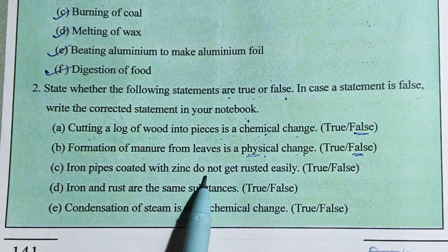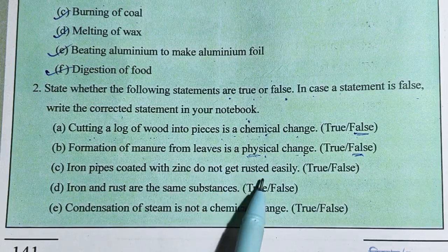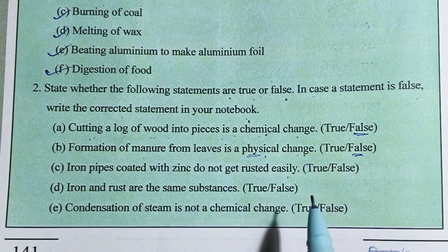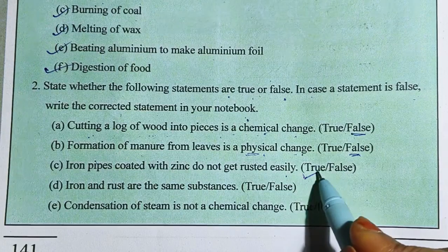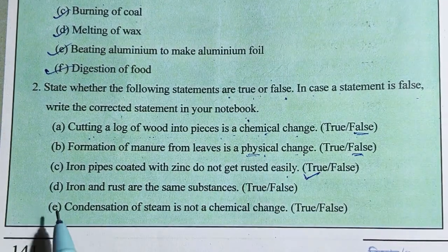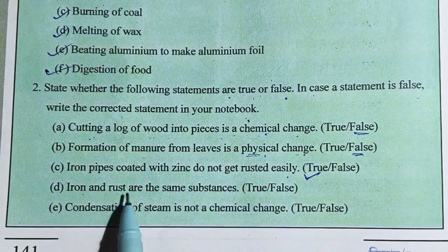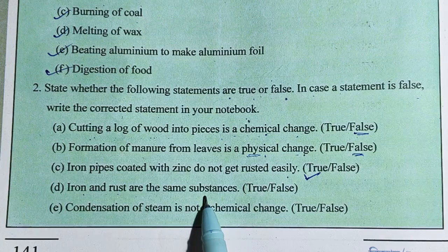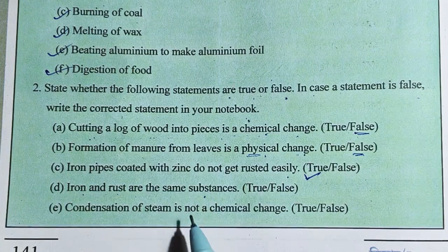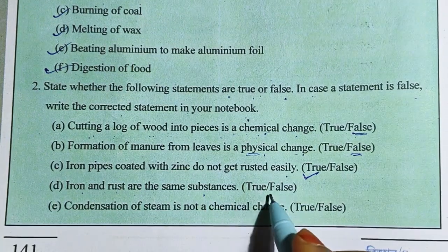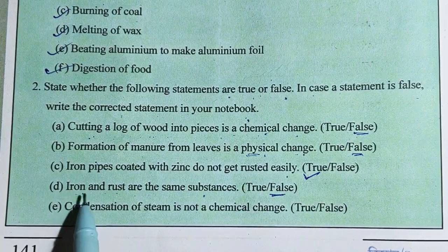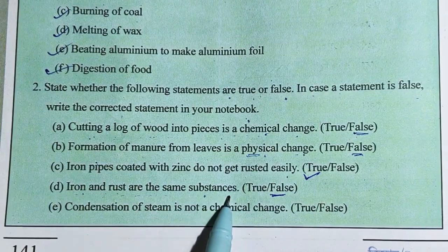Iron objects coated with zinc do not get rusted easily — this is true. Number D: Iron and rust are the same substance — this is false. Iron and rust are not the same substances.